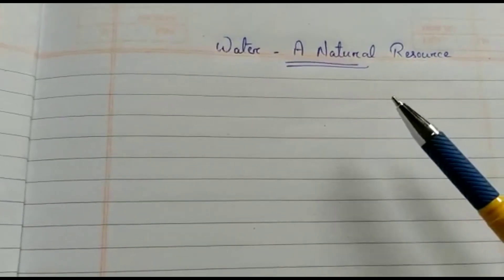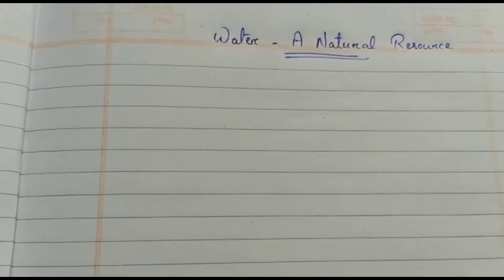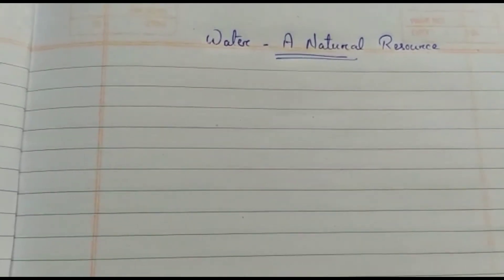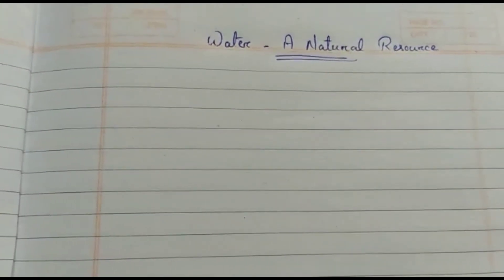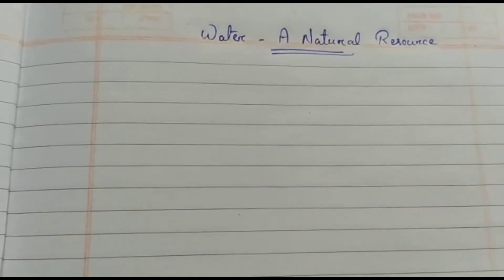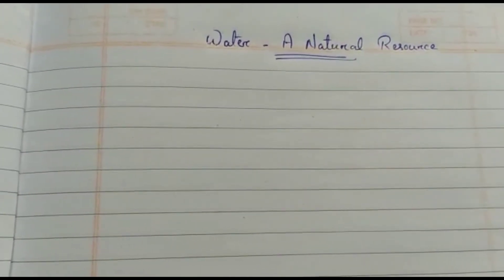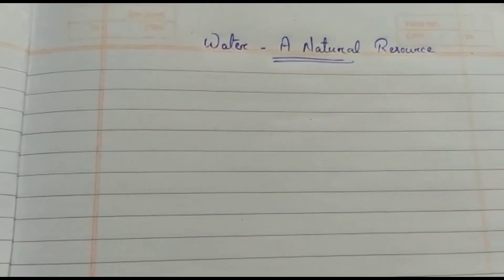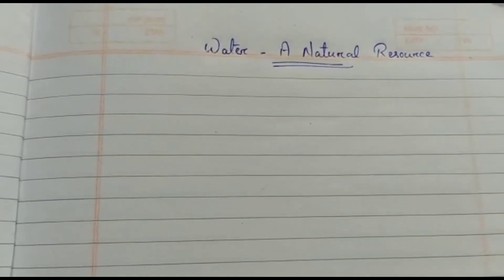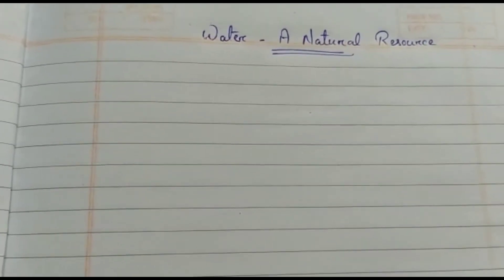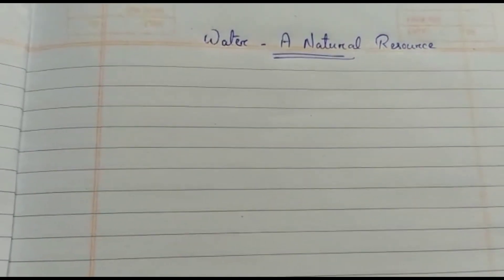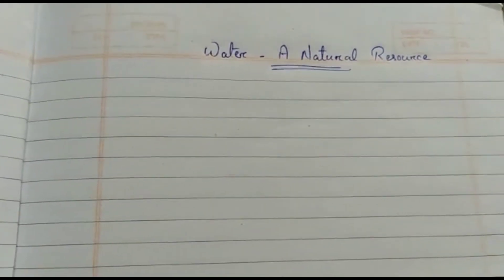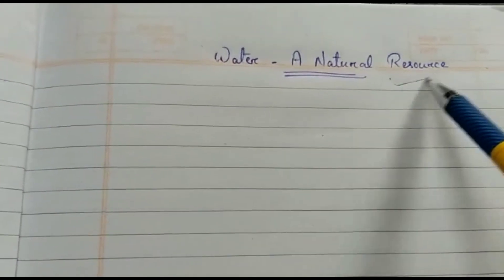First of all we should know what is a natural resource. We are now living in the 21st century where we are developing at a very fast pace with new technologies and new inventions that make our lives more comfortable. The source of all these new things comes from nature. The only source of materials for humans is the earth and its atmosphere, and the materials that we get from nature are called natural resources.